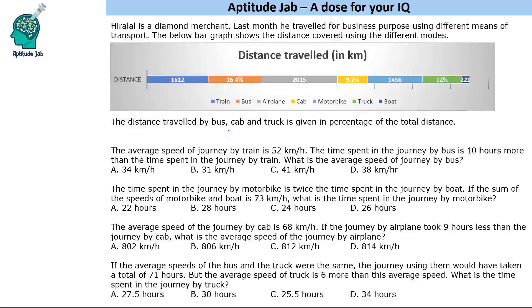The distance traveled by bus, cab, and truck is given in percentage of total distance. So it's easy to figure out that we are given three values in percentage terms and other values in number terms. So simply, you just add these terms. If we add this, 25.6, 37.6, these three, the remaining distance will be 62.4%.